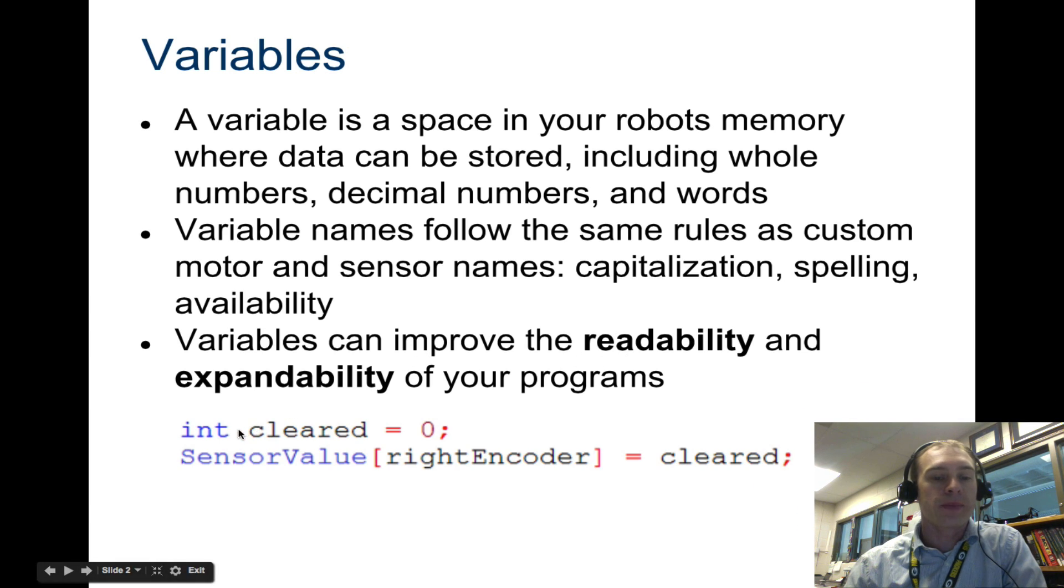So if you choose a variable, you can name it whatever you want. In this example they've named it cleared, and it is an integer. An integer just means it's a whole number. So we have declared this integer, we've called it cleared, and we've set it equal to a value of zero. Now we are saying that sensorValue rightEncoder equals cleared. So what is the right encoder value set to right now? Zero, because it's set to cleared, and cleared is zero.